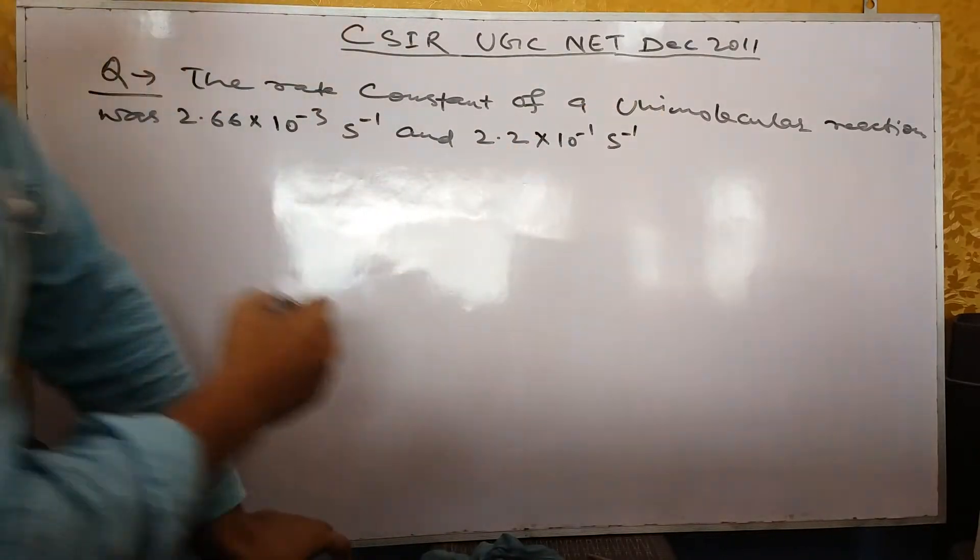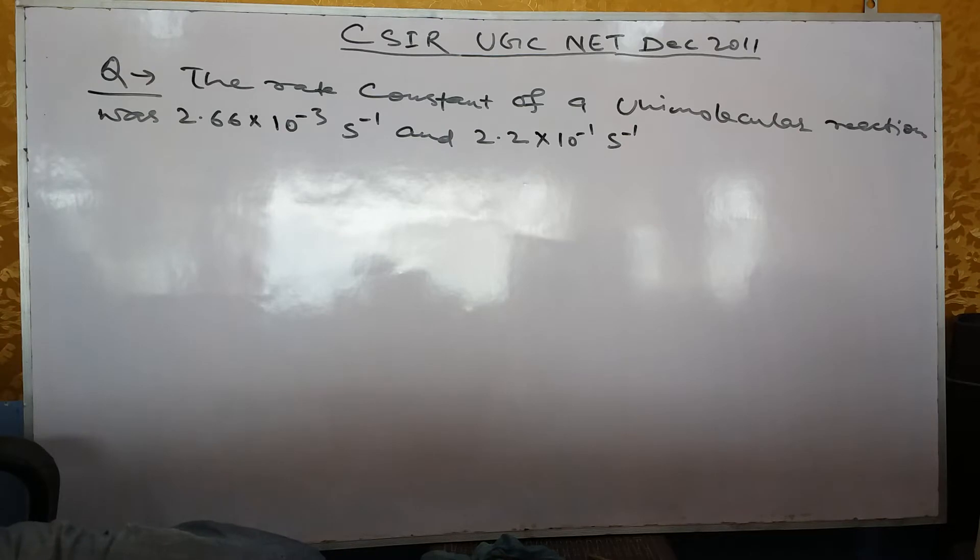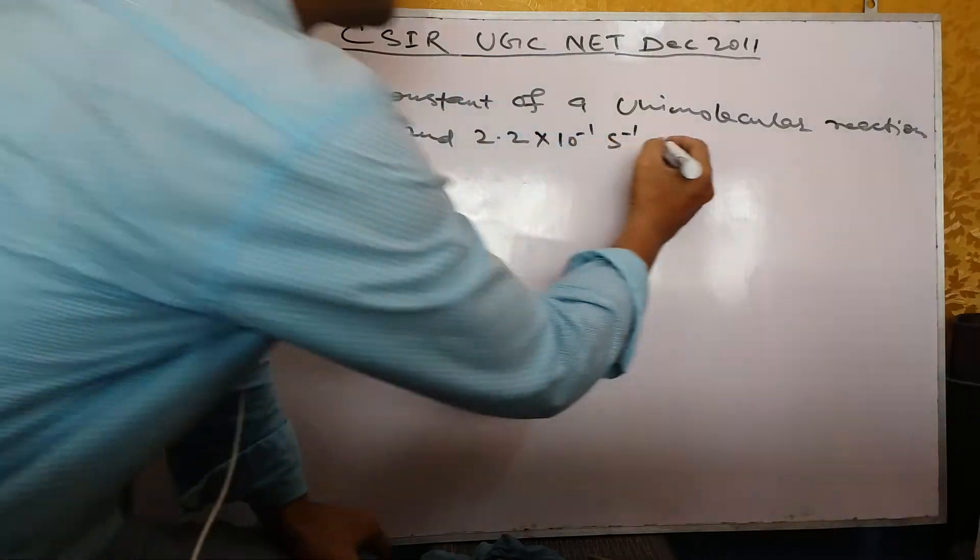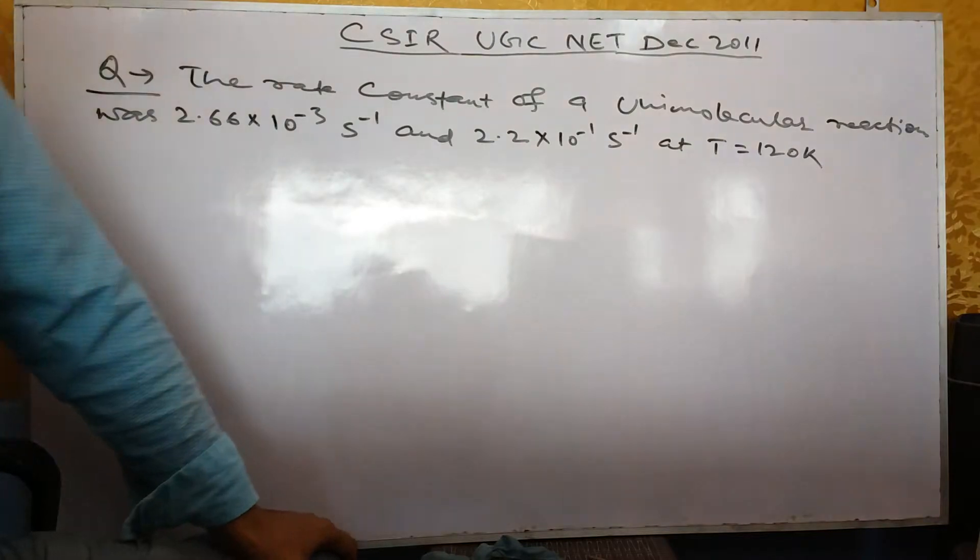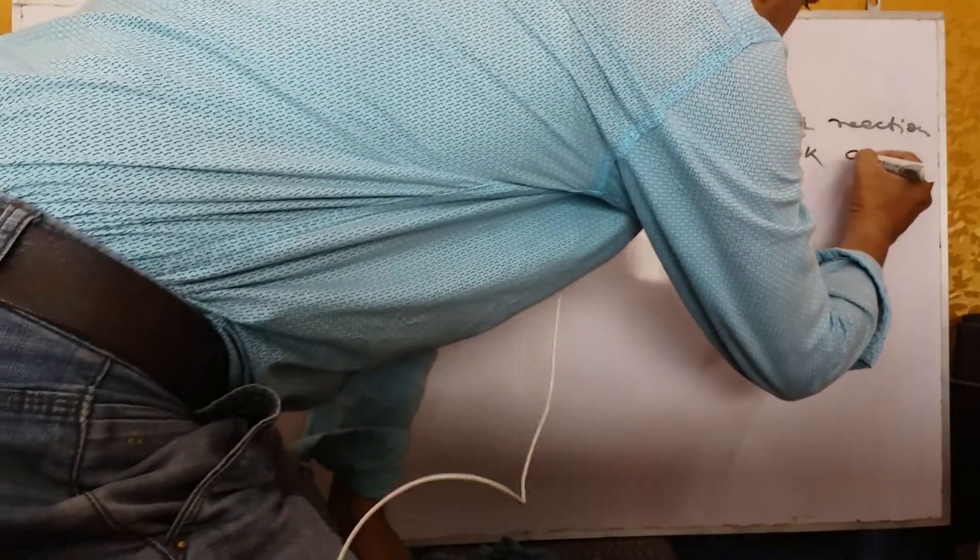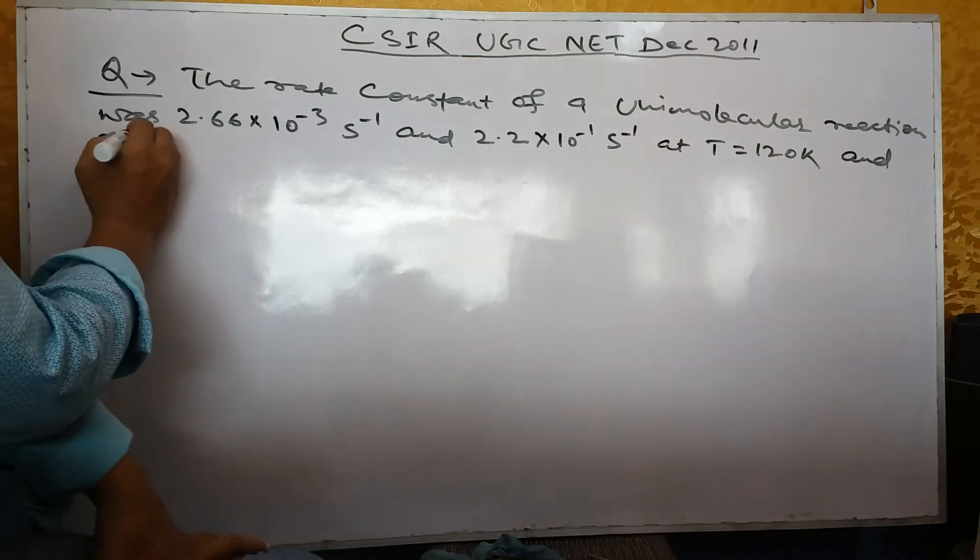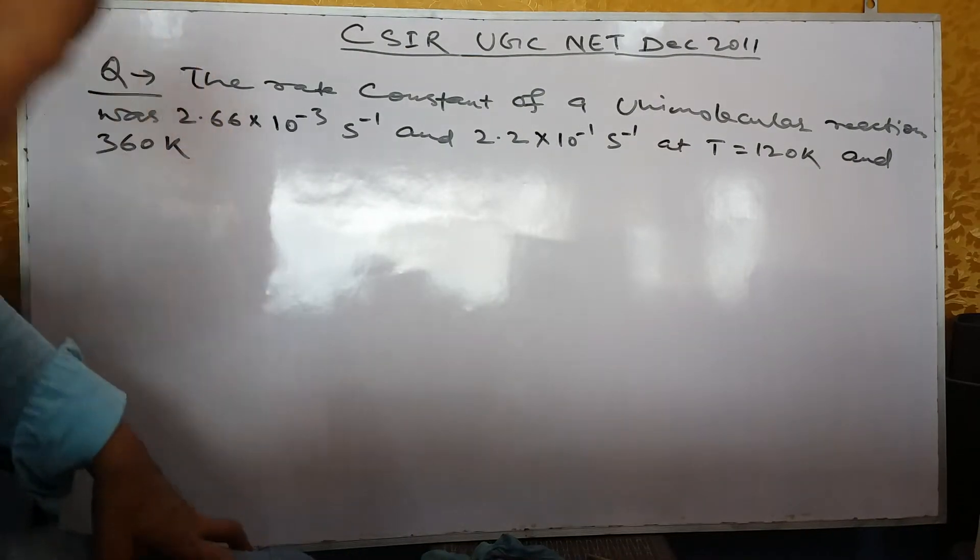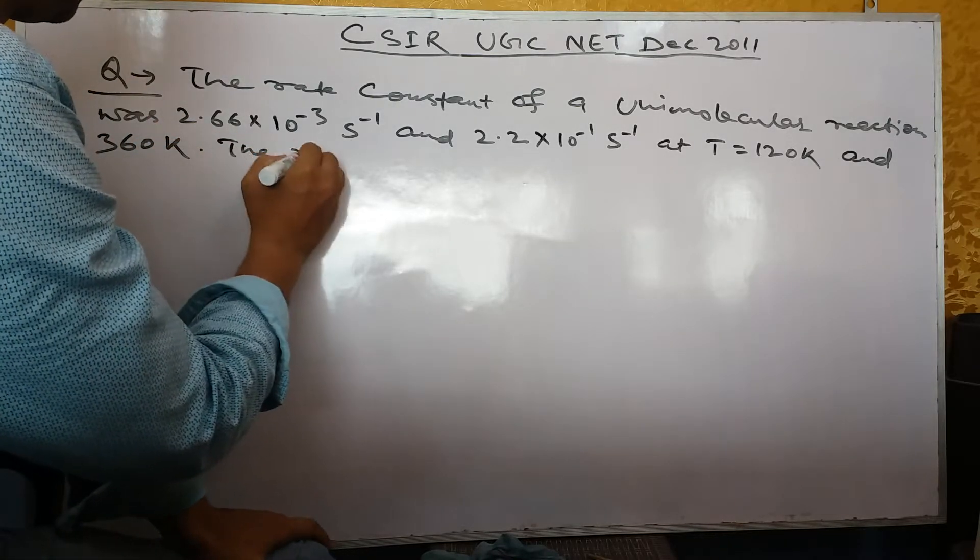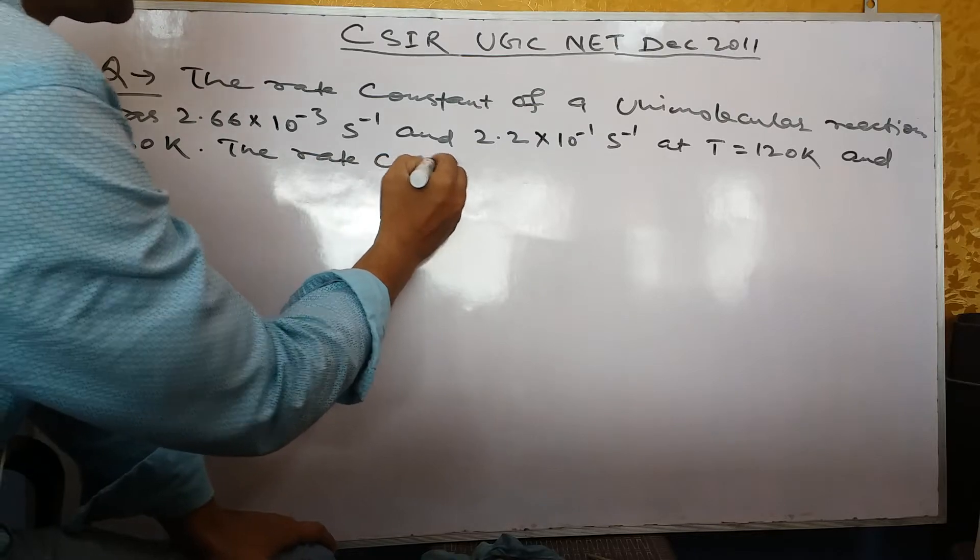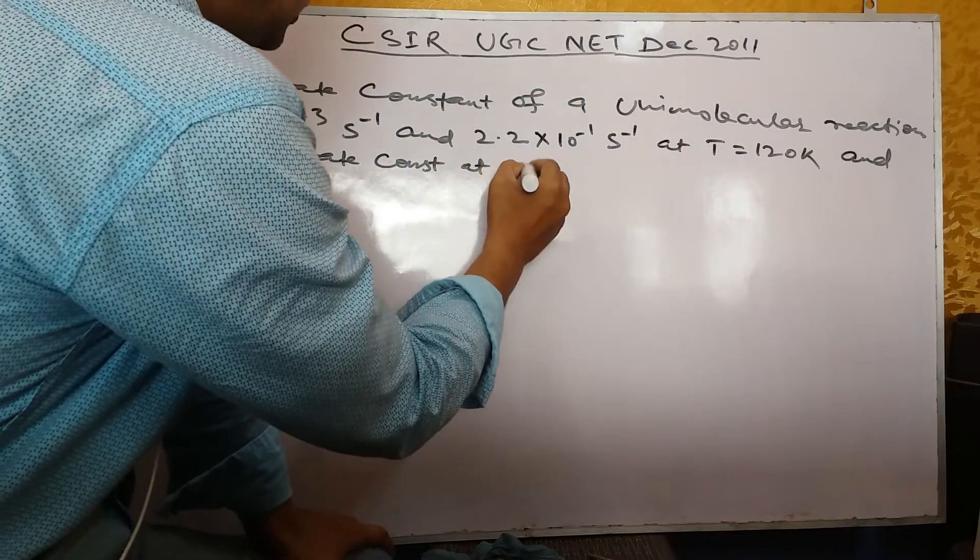These are rate constants, K1 and K2, given at temperatures 120 Kelvin and 330 Kelvin. Find the rate constant at 240 Kelvin.